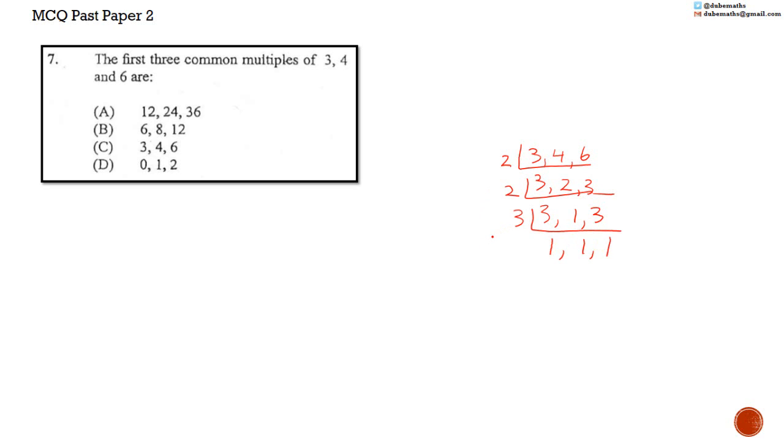If the lowest common multiple is 12, then the other common multiples have to be larger. Thus, the only possible answer is A.